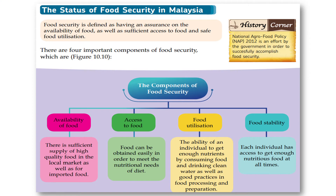Next is the issue of the status of food security in Malaysia. Food security is defined as having an assurance on the availability of food, as well as sufficient access to food and safe food utilization.